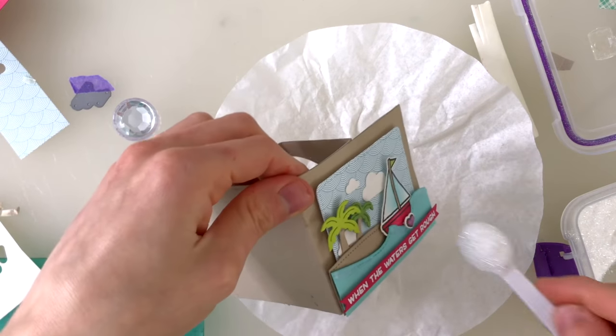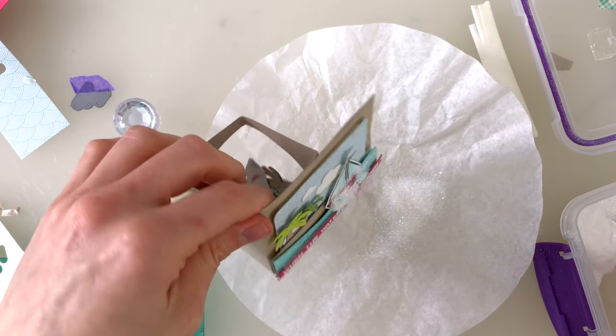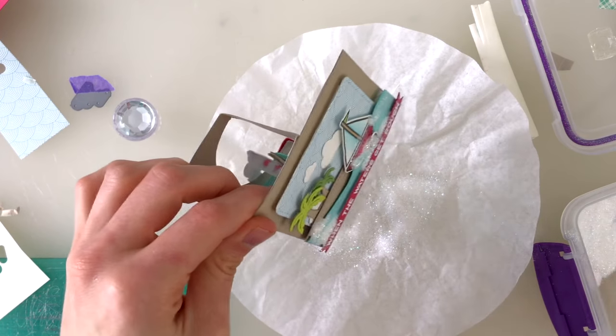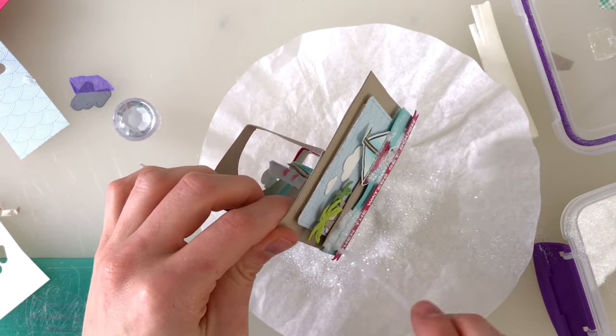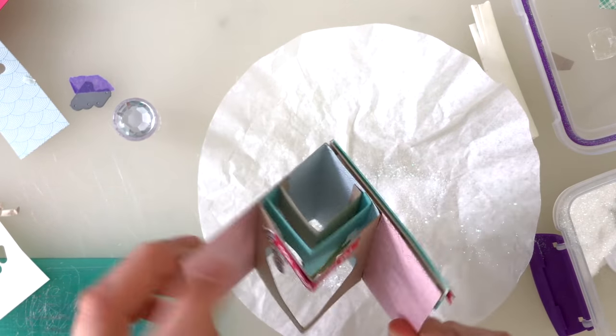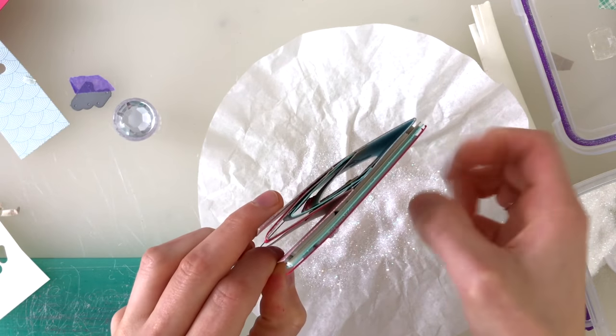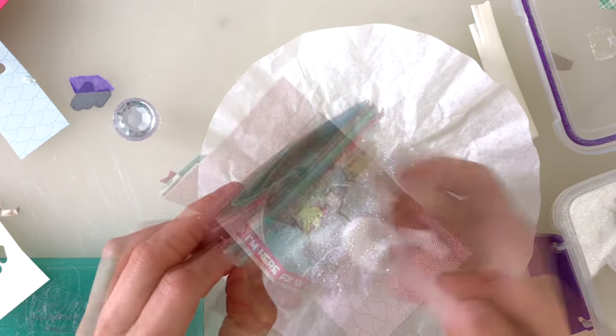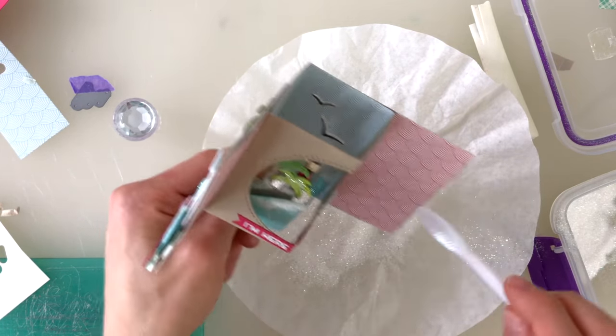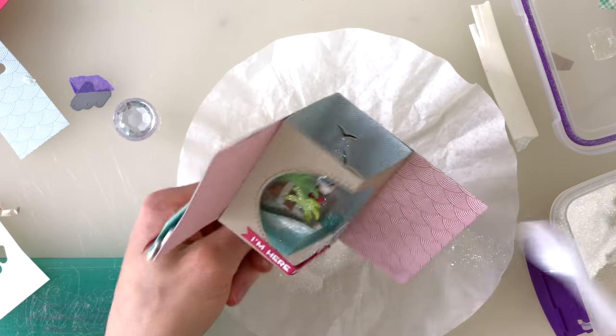So I used those glitter nouveau drops to add some glitter areas to my card and then I sprinkled on some Lawn Fawn prisma glitter for some extra sparkle and shine and I did that to both the inside and the outside of the card on the waves and the lighthouse and also on the little heart that's on the front of the card.